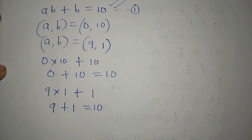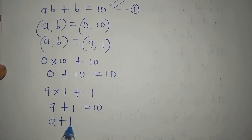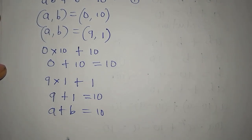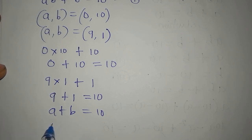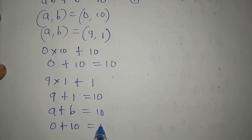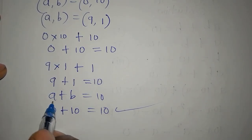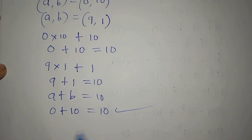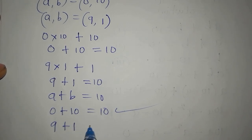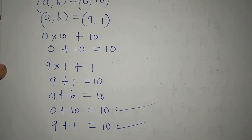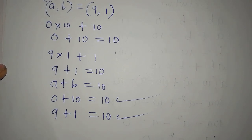Looking at equation 2 (A plus B equals 10): with the first solution, 0 plus 10 equals 10 — satisfied. With the second solution, 9 plus 1 equals 10 — also satisfied. Thank you for watching.